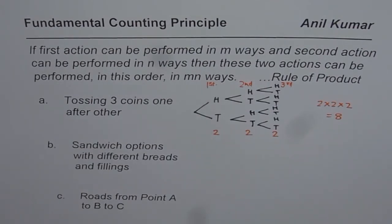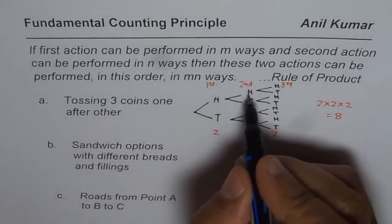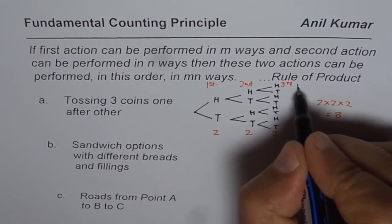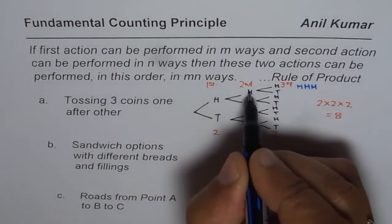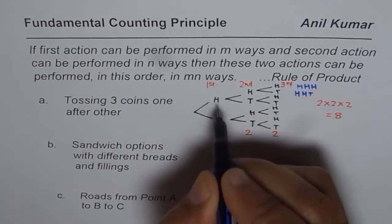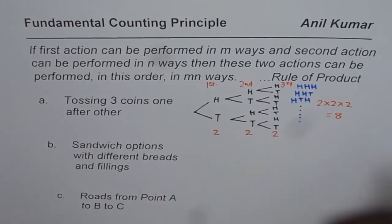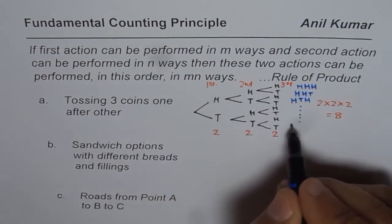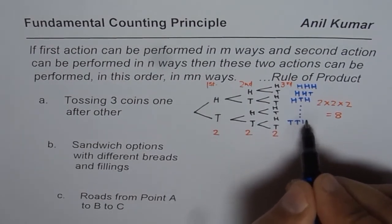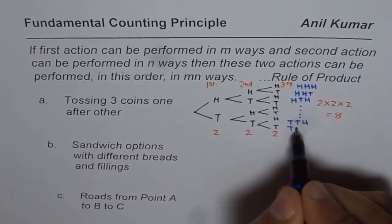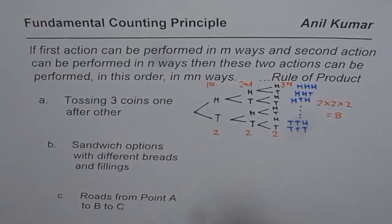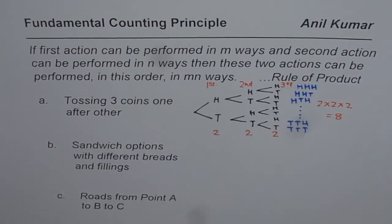Let us elaborate a bit more. The possibilities are: head, head, head — that's the first. Then head, head, tail. Then head, tail, head. You can continue listing them. When you come to the end, it could be tail, tail, head and tail, tail, tail. When you count all these possibilities, there will be eight in number. In any tree diagram, you will always find that this rule can be applied.